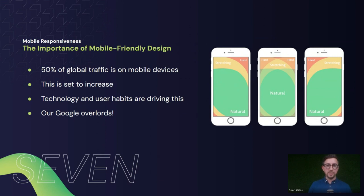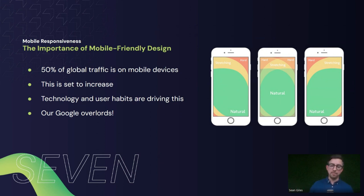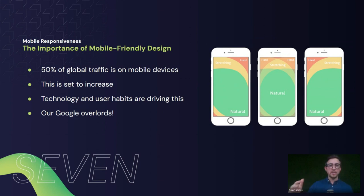50% of all global traffic is on mobile devices, and this is set to increase as technology advances and user habits shift. People are more likely to go to their phone to access information these days. As high-speed internet like Starlink becomes more accessible, mobile users will likely increase even further.